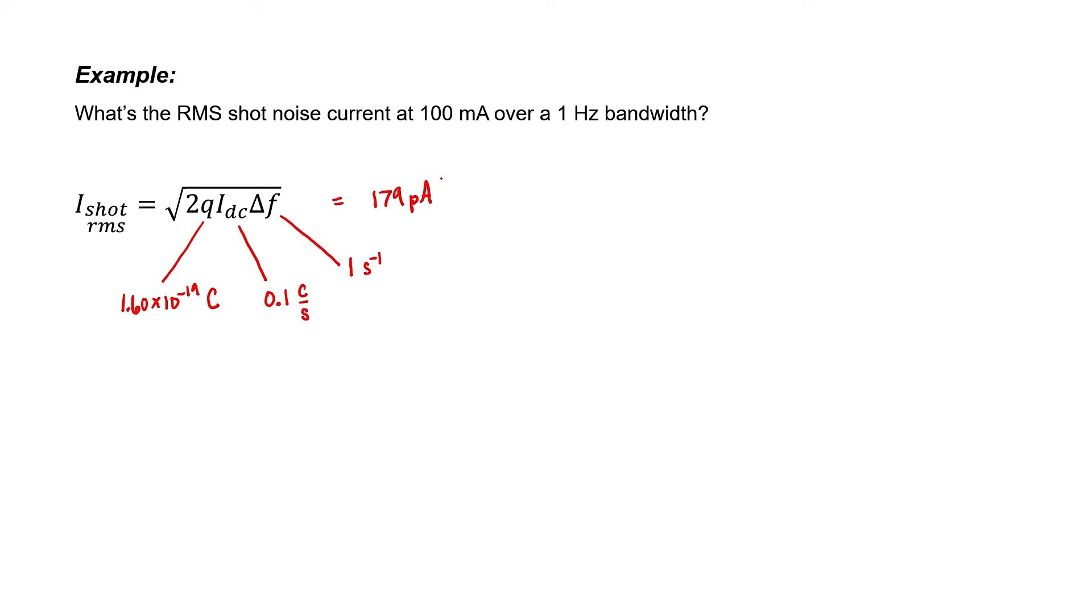Our DC current was in the milliamp range, and the AC current due to the shot noise is in the picoamp range, so there's literally a billion times difference between these two currents. The shot noise here will probably not matter too much.